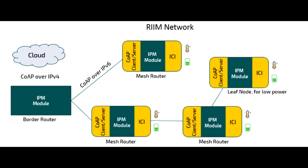The leaf is a special node type used for very low-power nodes. It sits at the end of the network and has no mesh routing functionality. It collects and forwards data to and from local sensors and actuators up to its parent node. The leaf node can be put to sleep for very low power consumption, ideal for battery-operated sensor nodes.